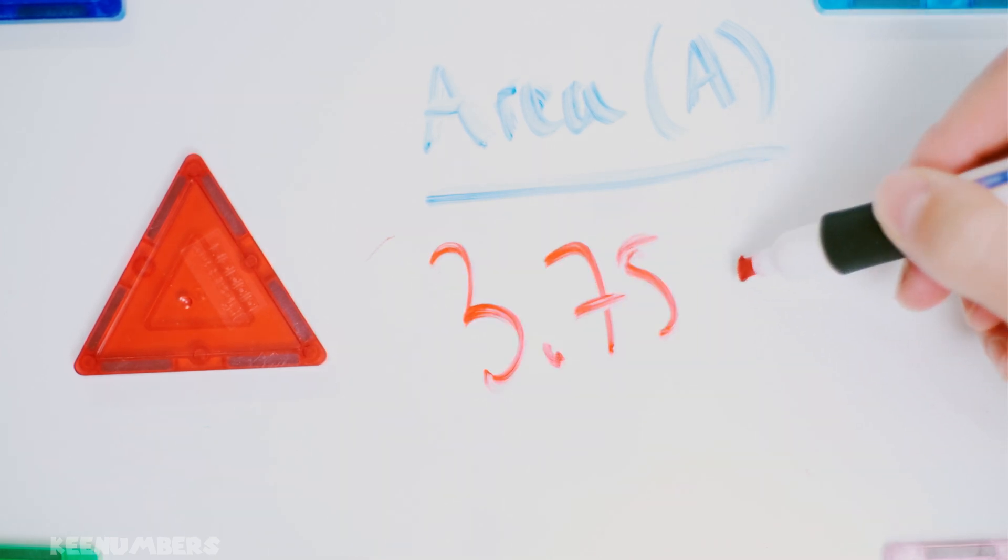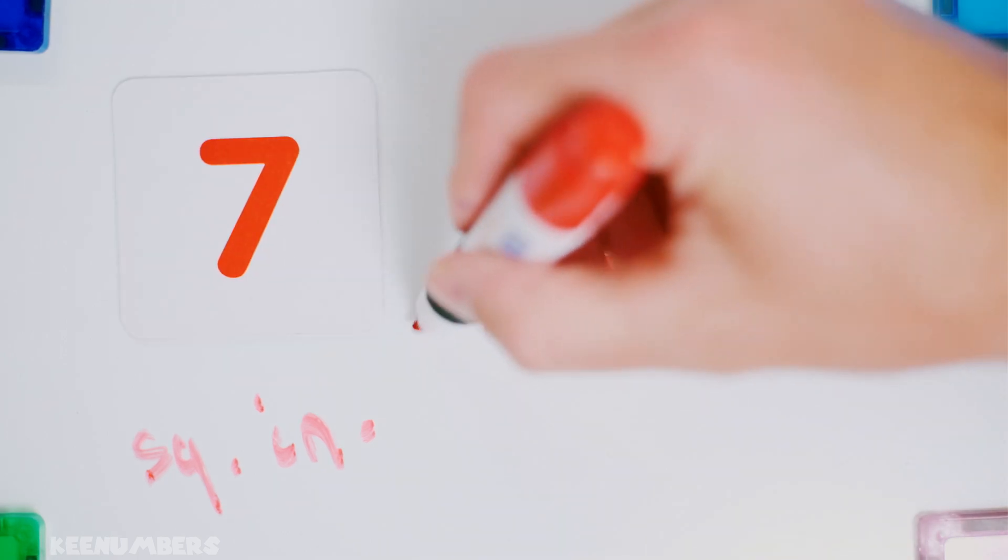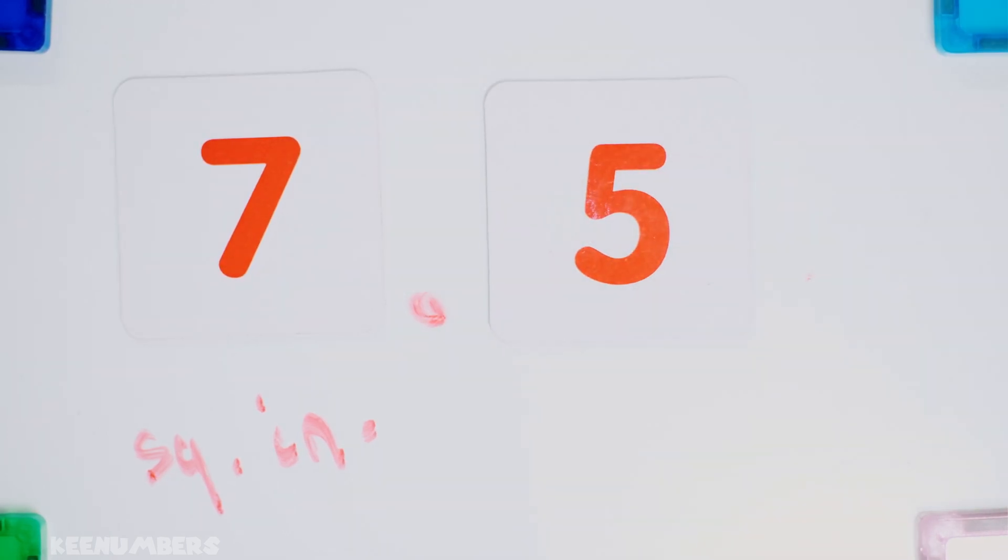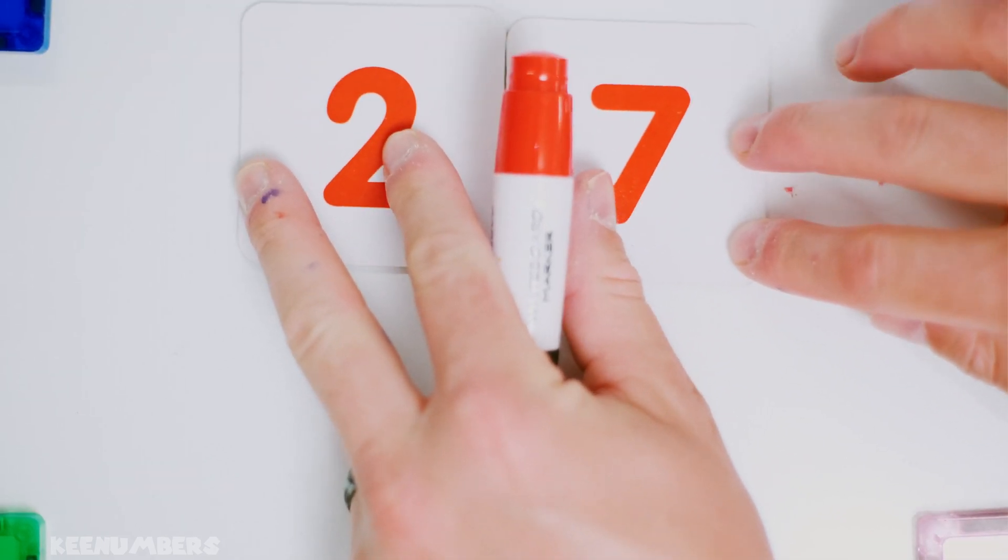What does that work out to be? Good news, it's an easy answer: three and three quarters, or 3.75 square inches. And how many of these are we dealing with? Two. So you double 3.75 - boom, you get 7.5 square inches.